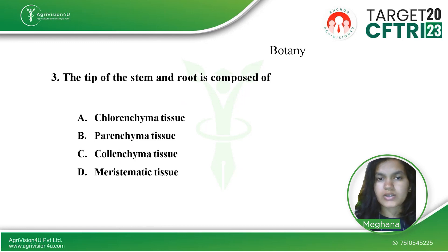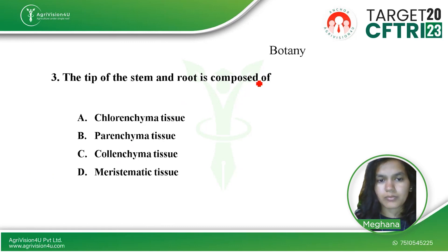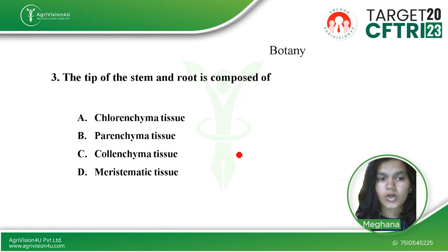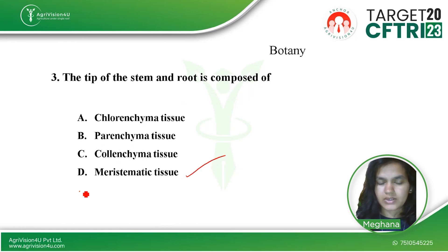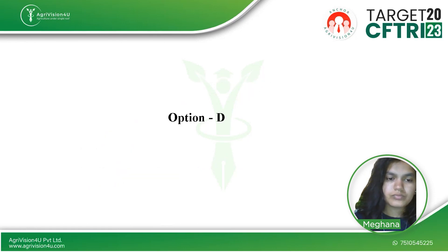The next question is from botany: the tip of the stem and root is composed of — option A, chlorenchyma tissue; option B, parenchyma tissue; option C, parenchyma tissue; option D, meristematic tissue. The tip of the stem and root is composed of meristematic tissue, so option D is the right answer.